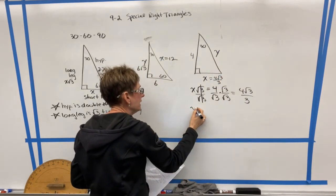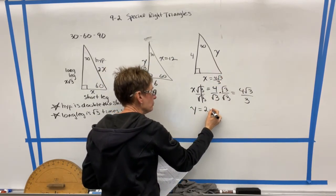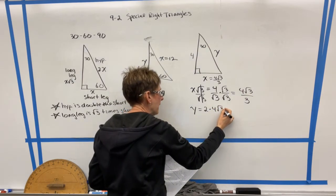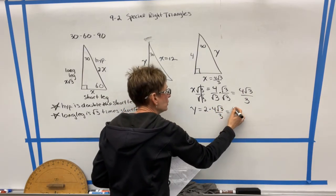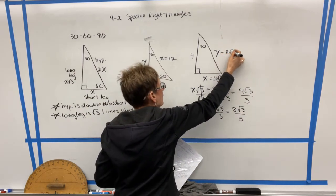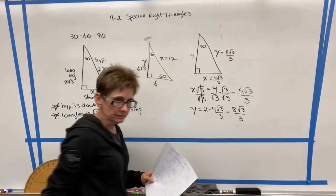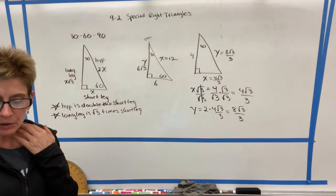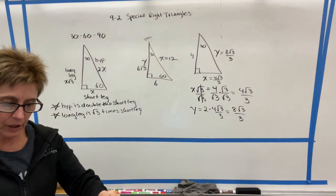Now, Y is two times that amount. So two times four radical three over three, which just ends up being eight radical three over three. So that is how we would do a slightly harder version of the problem.